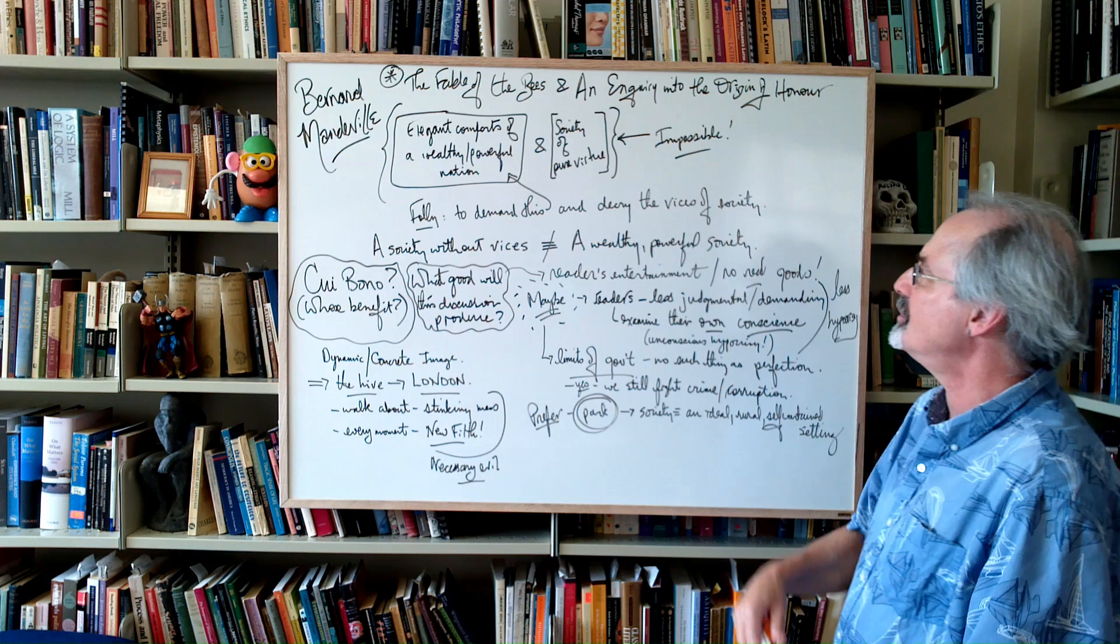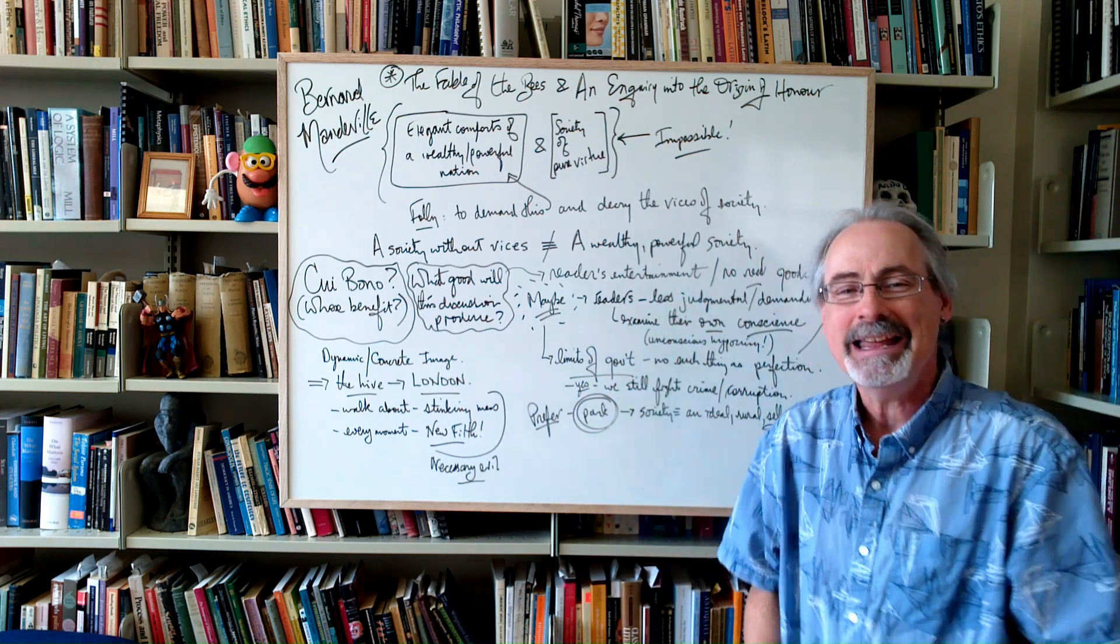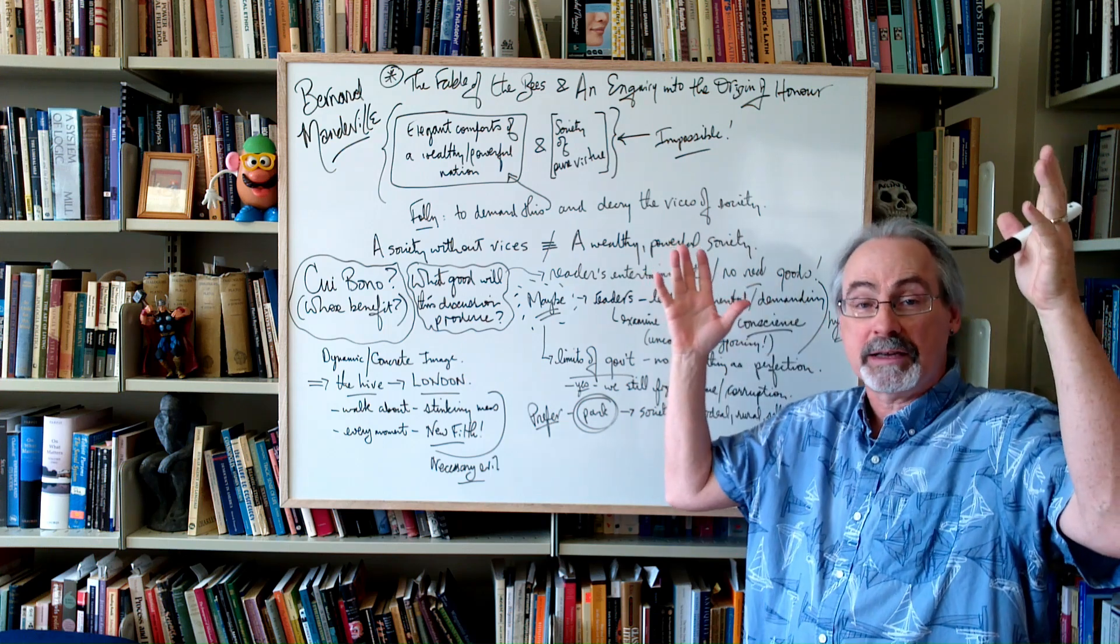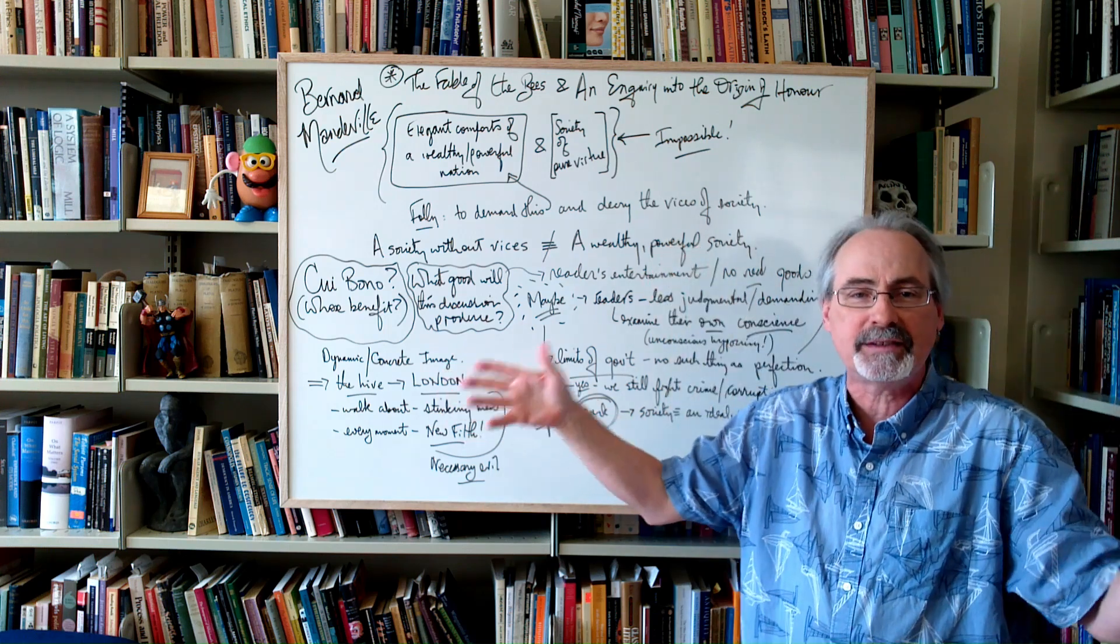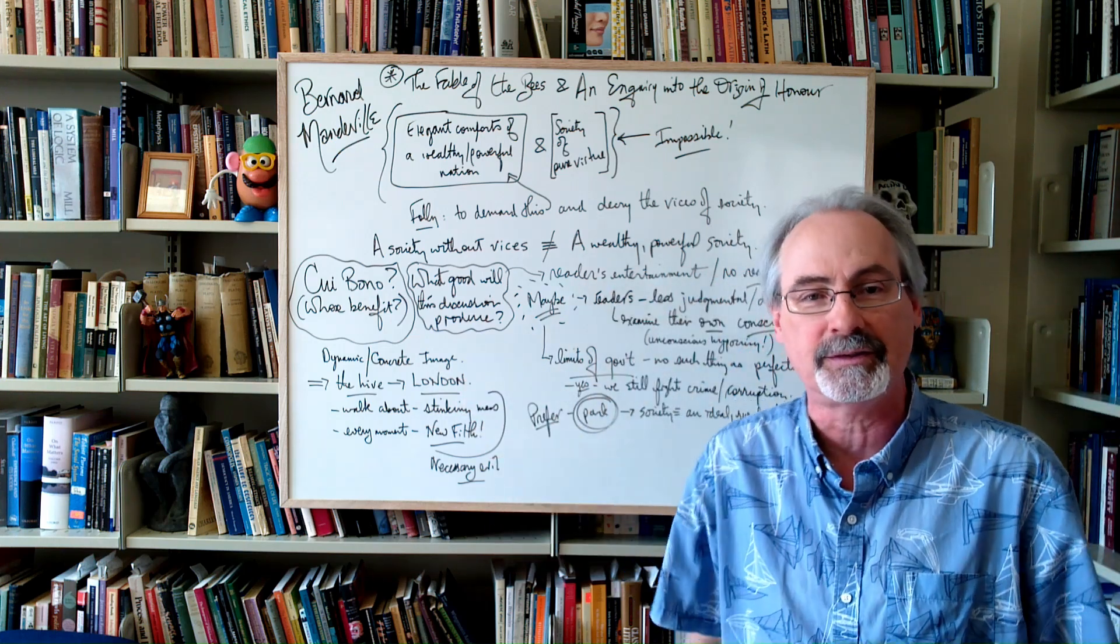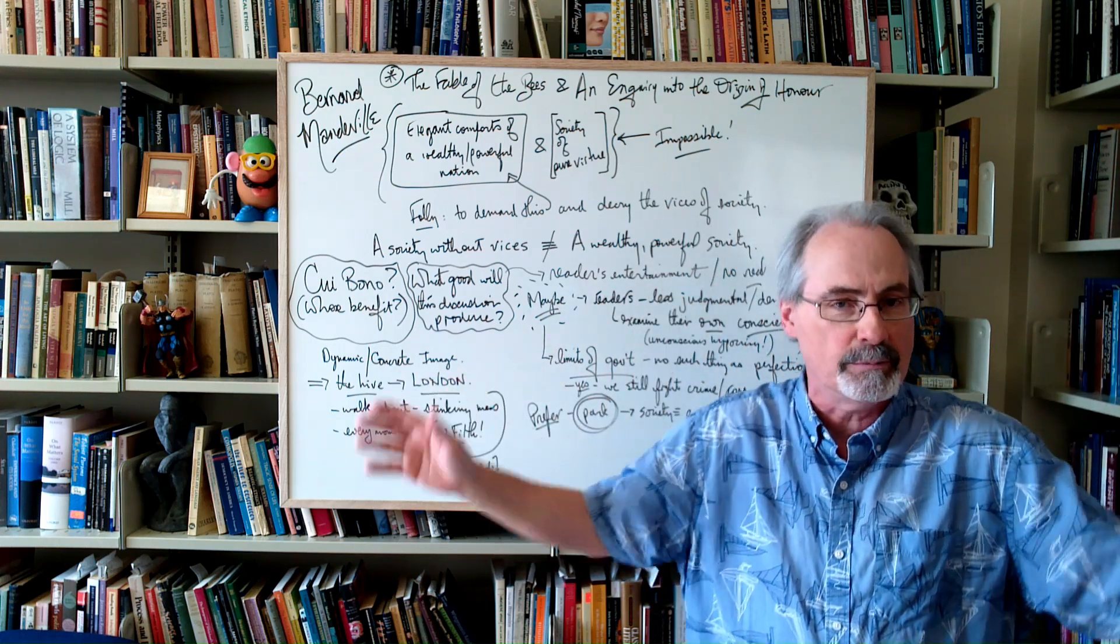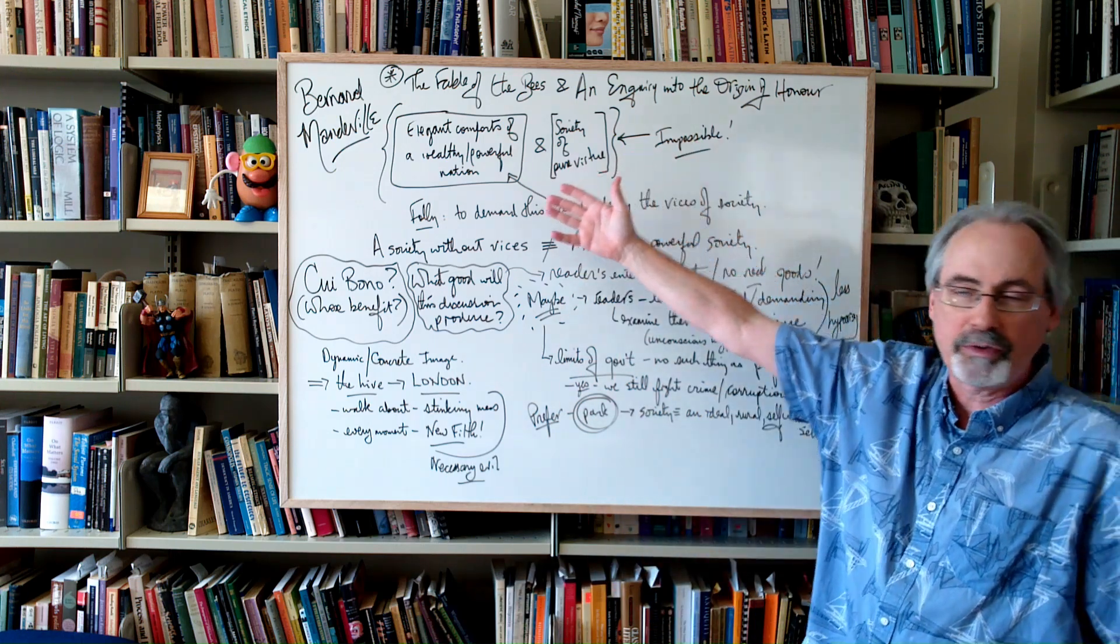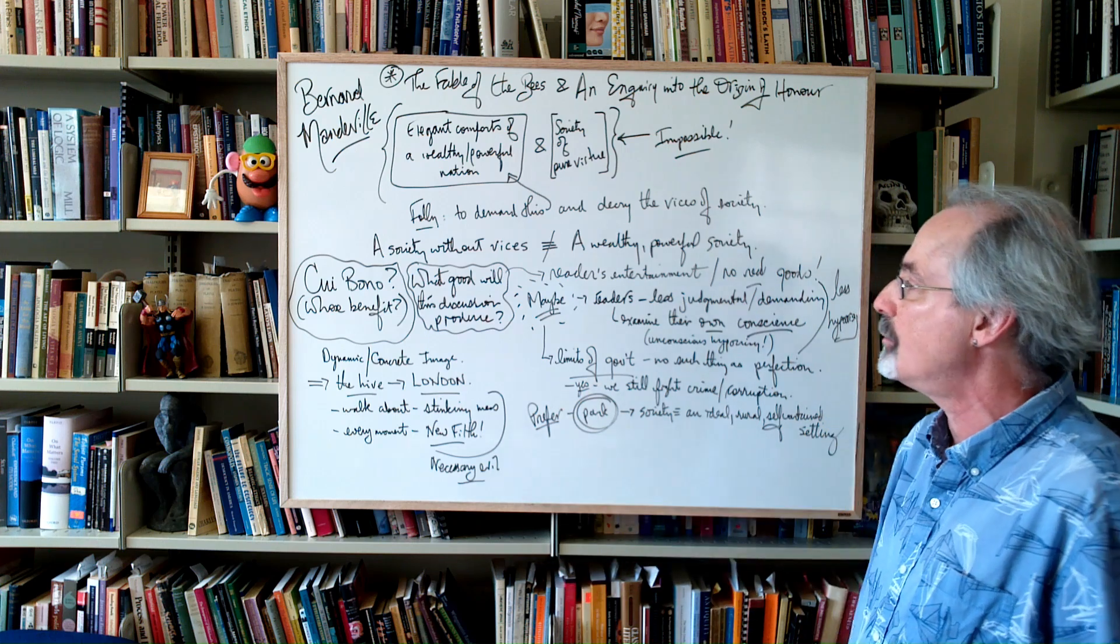And to insist on it and demand it and then say, I want this powerful society and I got a powerful society, hey that's good. Oh, look at all the vices and sit there and decry it. That's just folly and nonsense and unreasonable to behave like that. Make a choice. You can't have both. So you have to pick one or the other.